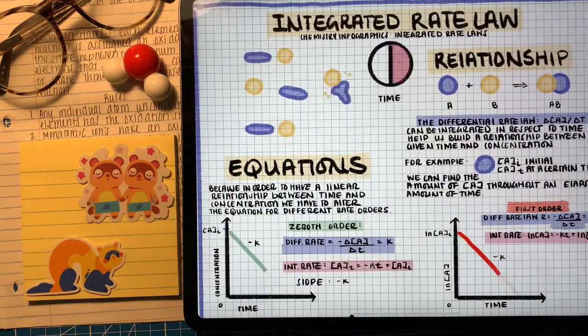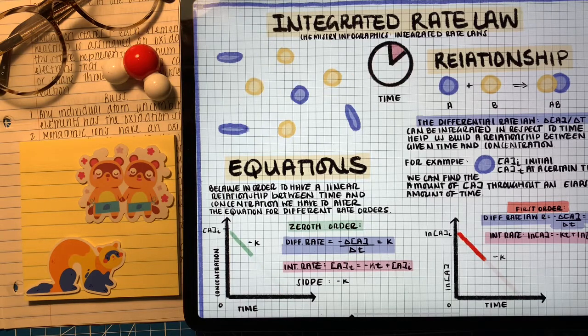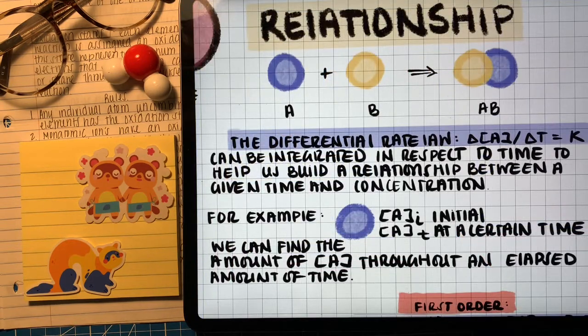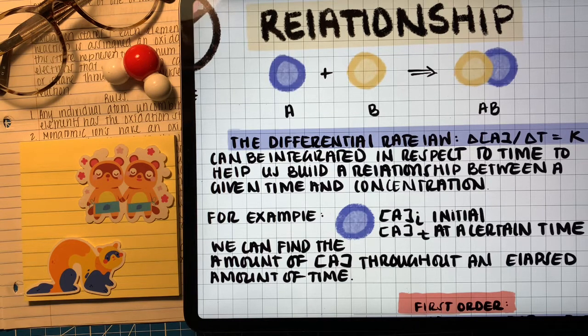In today's video we're going to explore a new relationship. This is a relationship between time and rate, and through using the integrated rate law we can find the concentration of our reactant at any certain time throughout the reaction as long as we know the initial and the rate order.